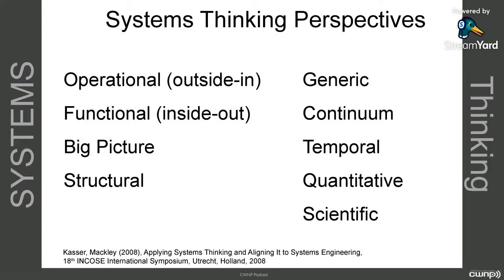The next perspective is the big picture perspective. The big picture perspective looks at a system in the context of the system it is in, but doesn't always stop with only the systems immediately connected to it. It may ask: my system — we'll call it SOI, the system of interest — is connected to systems A, B, and C. But system A is connected to systems D, E, and F, and system B is connected to systems one, two, and three. The big picture branches out and says I want to look at those other systems too.